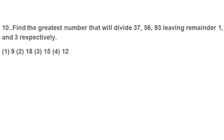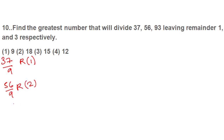Question 10: find the greatest number that will divide 37, 56, and 93 leaving remainders 1, 2, and 3 respectively. Looking at option 9: 37 divided by 9 gives remainder 1, 56 divided by 9 gives remainder 2, and 93 divided by 9 gives remainder 3 — all satisfied. Checking option 18: 37 divided by 18 gives remainder 1, 56 divided by 18 gives remainder 2, 93 divided by 18 gives remainder 3 — also satisfied.